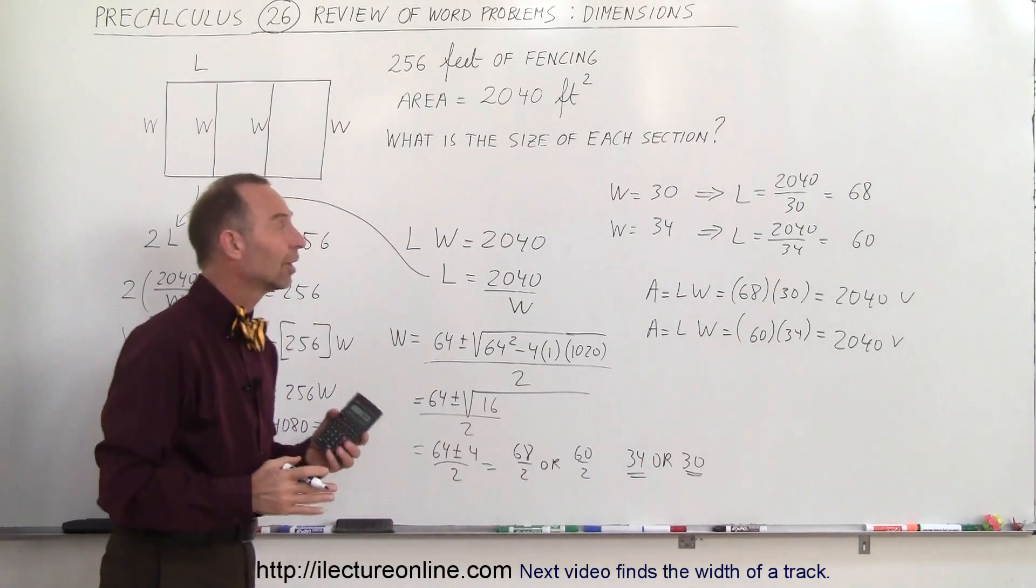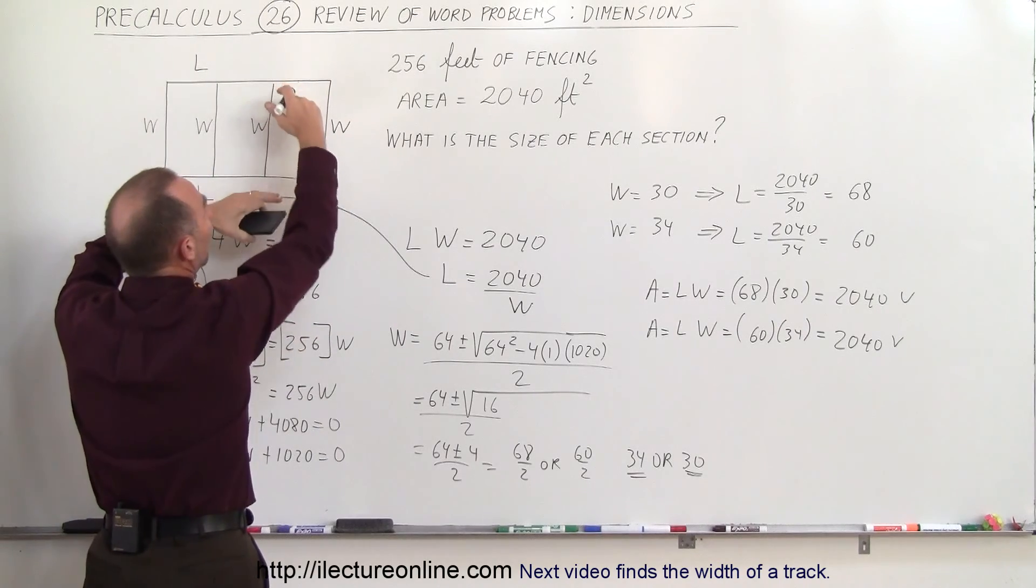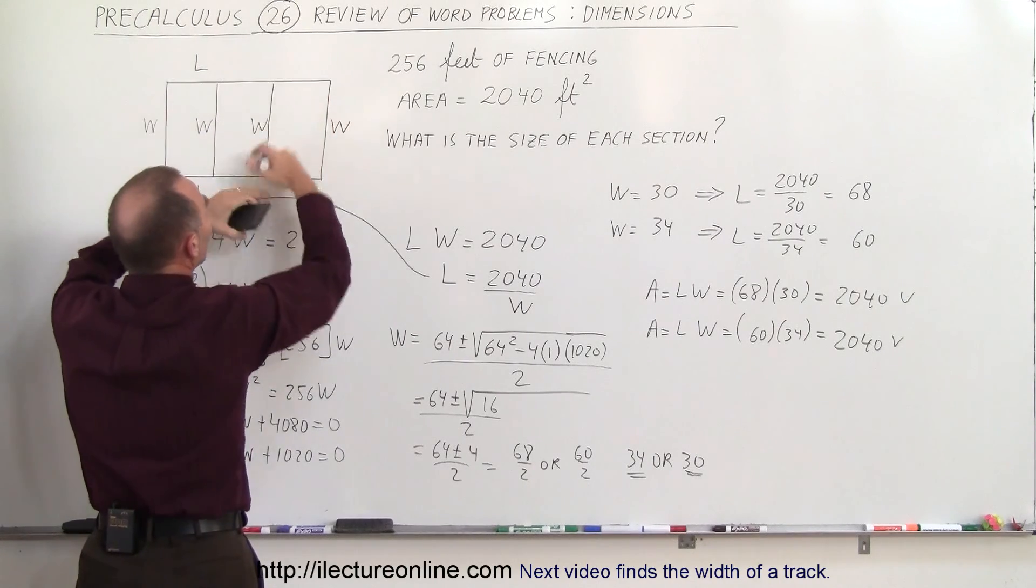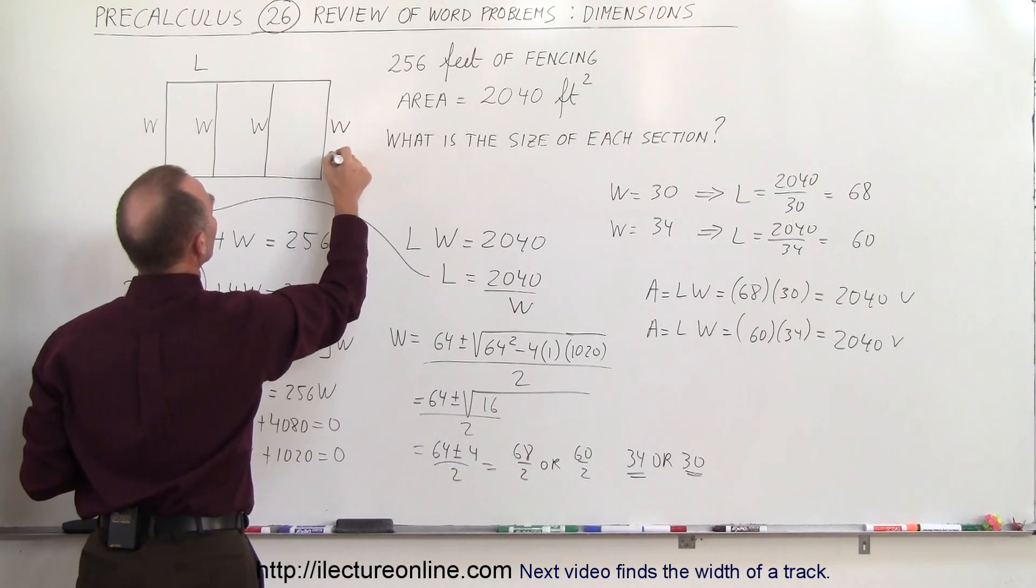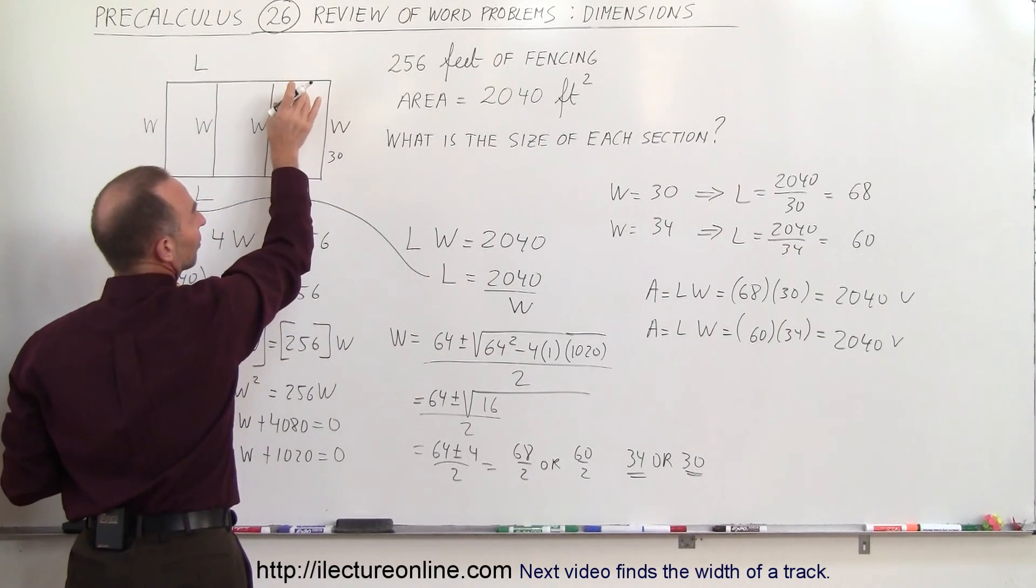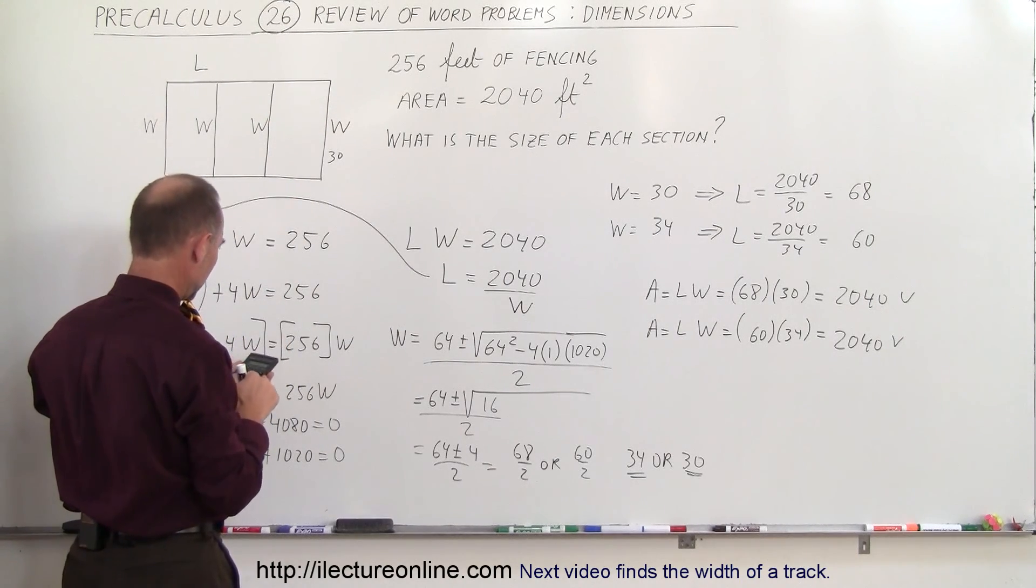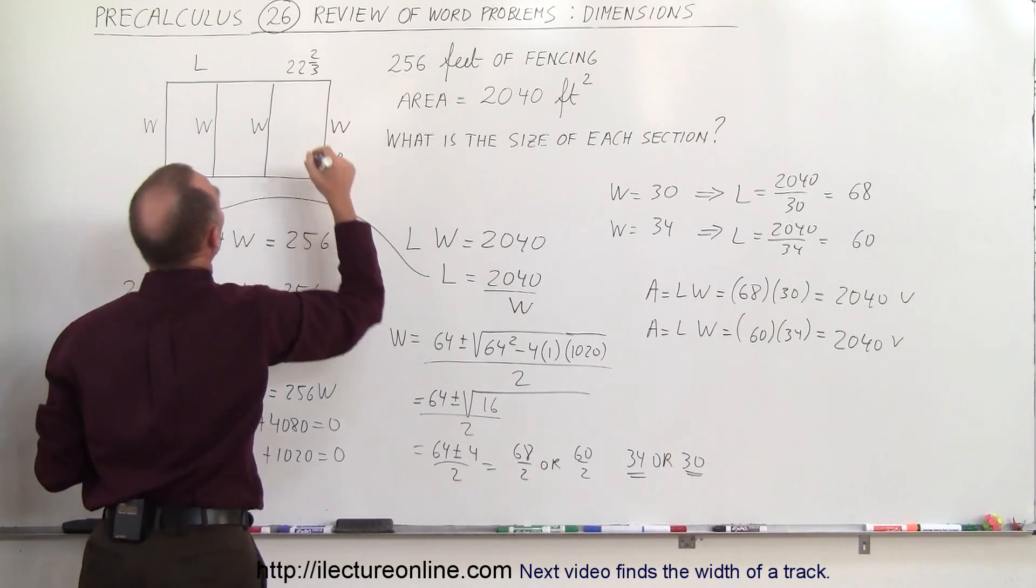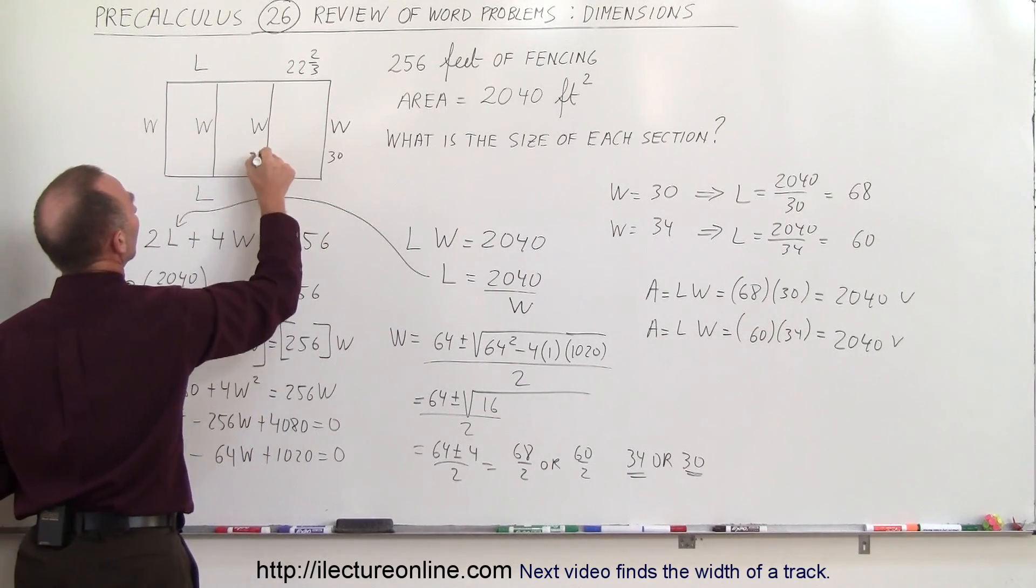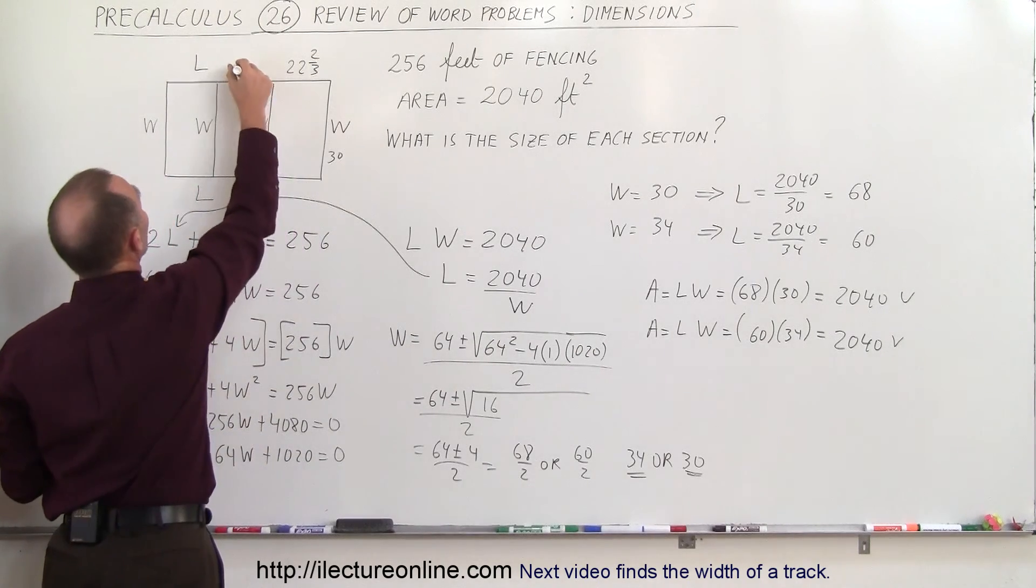we can either have 68 feet long and 30 feet wide or 60 feet long and 34 feet wide. So at any rate if we take the first option then width would be 30 and this would be 68 divided by 3 so 68 divided by 3 is 22 and 2 thirds, 22 and 2 thirds or we could have 34 and that would be 60 divided by 3 which would be 20.